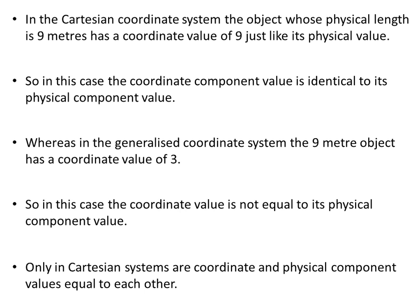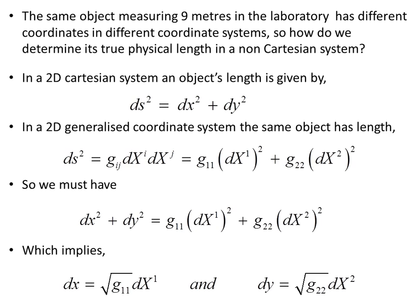There is no particular reason for choosing meters — it is just a convenient unit. Any unit length works: millimeters, centimeters, light years, kilometers, and so on. The same object measuring nine meters in the laboratory has different coordinates in different coordinate systems. So how do we determine its true physical length in a non-Cartesian system?